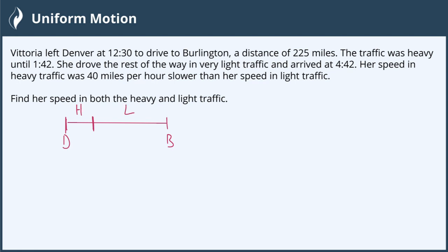We start driving at 12:30 and we're in heavy traffic until 1:42. So we want to look at how much time has passed. Well, 12 to 1 is 1 hour and 30 to 42 is 12 minutes. So we're in heavy traffic for 1 hour and 12 minutes.